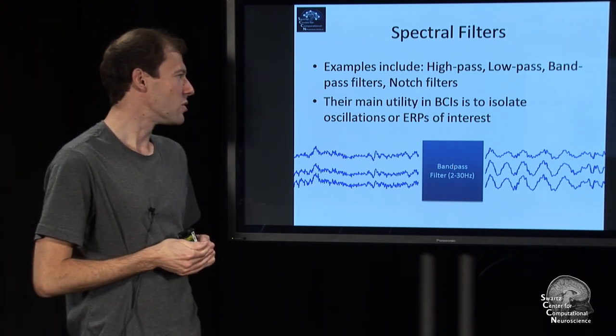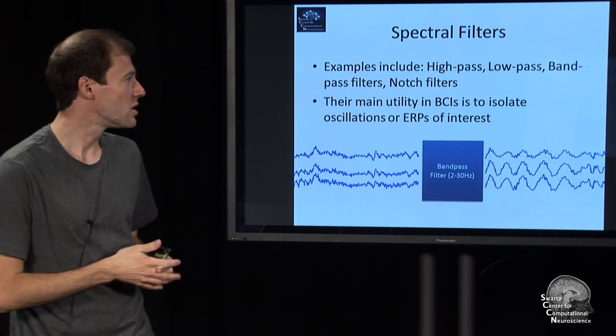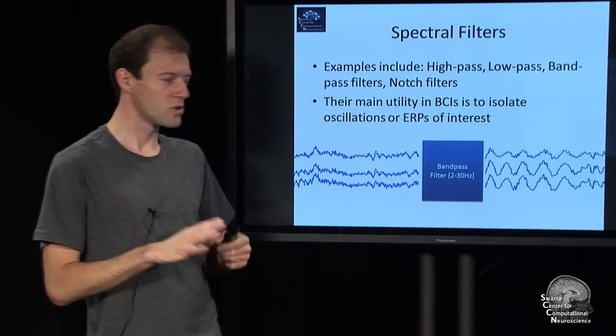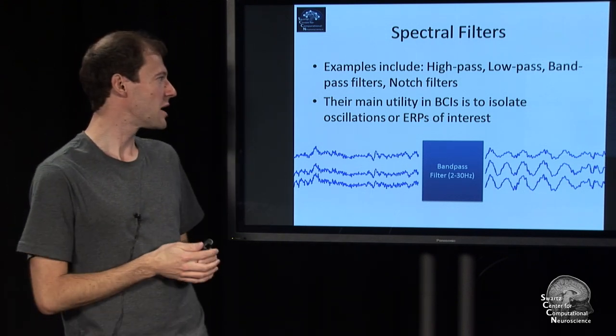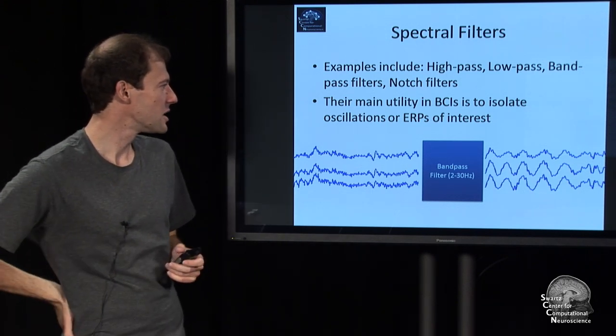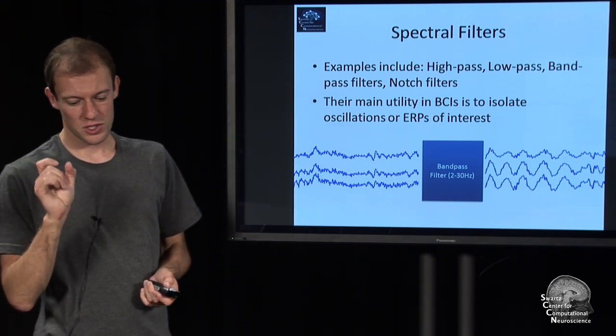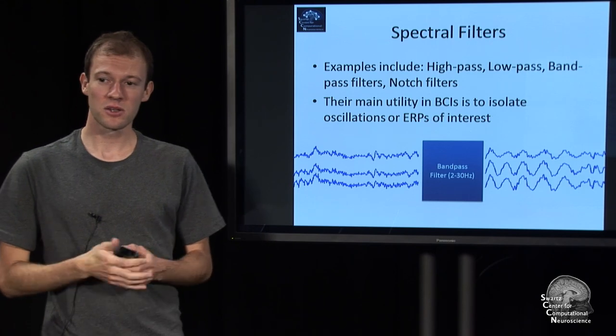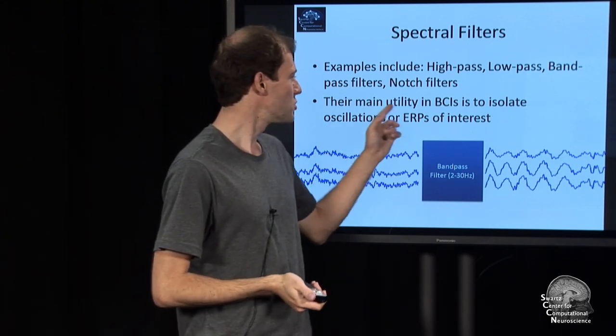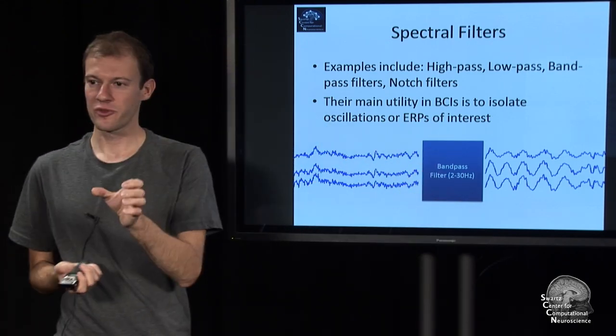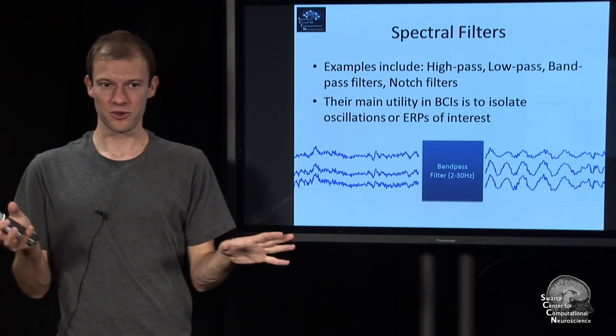There's a bunch of examples that are practical. In BCIs, we call them high-pass filters, low-pass filters, band-pass filters. The main purpose in BCI context is just if you know something is happening in a particular frequency band, they allow you to isolate these frequency components and suppress all this stuff that you call noise.